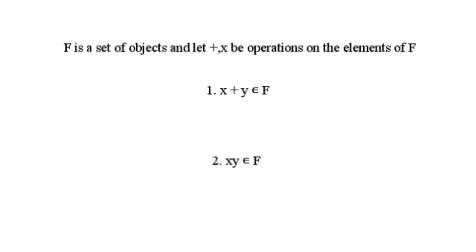So suppose you have a set of objects, f, and operations of addition and multiplication on the elements of f. So in order for f to be a field, it has to satisfy two element properties, which are that if x and y are elements of f, then x plus y should also be an element of f, and x times y should also be an element of f.